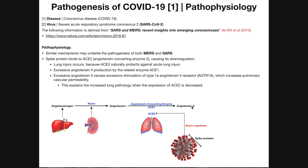Angiotensin-2 has many functions, one of which is to increase blood pressure. That makes sense because if the stimulus for renin release is low blood volume and low blood pressure, the body needs to maintain constant blood pressure to ensure perfusion to tissues. So this is a negative feedback system. Angiotensin-2 can also bind to receptors in the lungs called type 1A angiotensin-2 receptors, and it increases pulmonary vascular permeability.